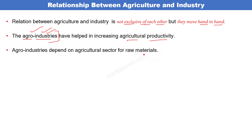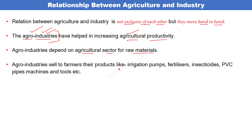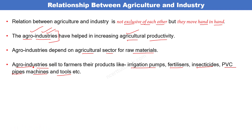Agro industries depend on agriculture sector for raw materials - जैसे sugar industry को sugar cane चाहिए जो agriculture sector से मिलता है। Agro industries sell to farmers their products जैसे irrigation pumps, fertilizers, insecticides, PVC pipes, tractors, machines and tools। इस तरह agro industries manufacturing sector को belong करती हैं और इनके products agriculture sector में काम आते हैं - दोनों एक दूसरे के complementary role में रहते हैं।